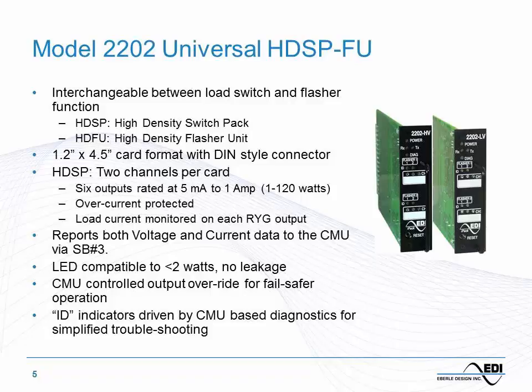Let's talk about the load switches, the HDSP, first — this is really the newest device in the cabinet. A couple of noticeable differences: these are not housed in a giant aluminum chassis because we don't need the heat dissipation that triac-based load switches require. They're card-based units with a similar form factor to a common loop detector card. They have a DIN connector, and each card has two channels with six outputs. Each output is rated at one amp, so these are limited to LED loads only.